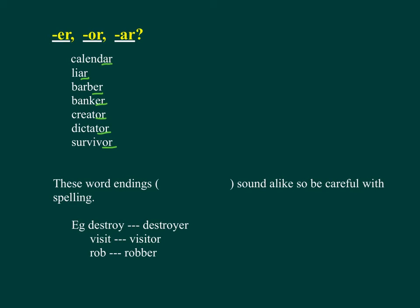These word endings — suffixes — sound alike, so be careful with spelling. For example: Destroy → Destroyer, Visit → Visitor, Rob → Robber.